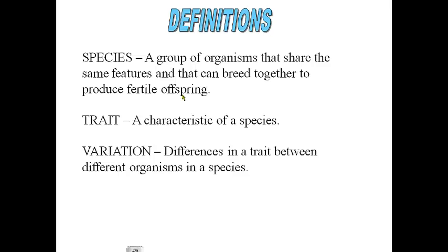Every species has a set of traits. A trait is basically a characteristic of the species. For instance, dogs have traits such as height, length, hair color, eye color, the length or types of teeth they have, blood type, and the length of their tail. All of these characteristics of a species are called traits.